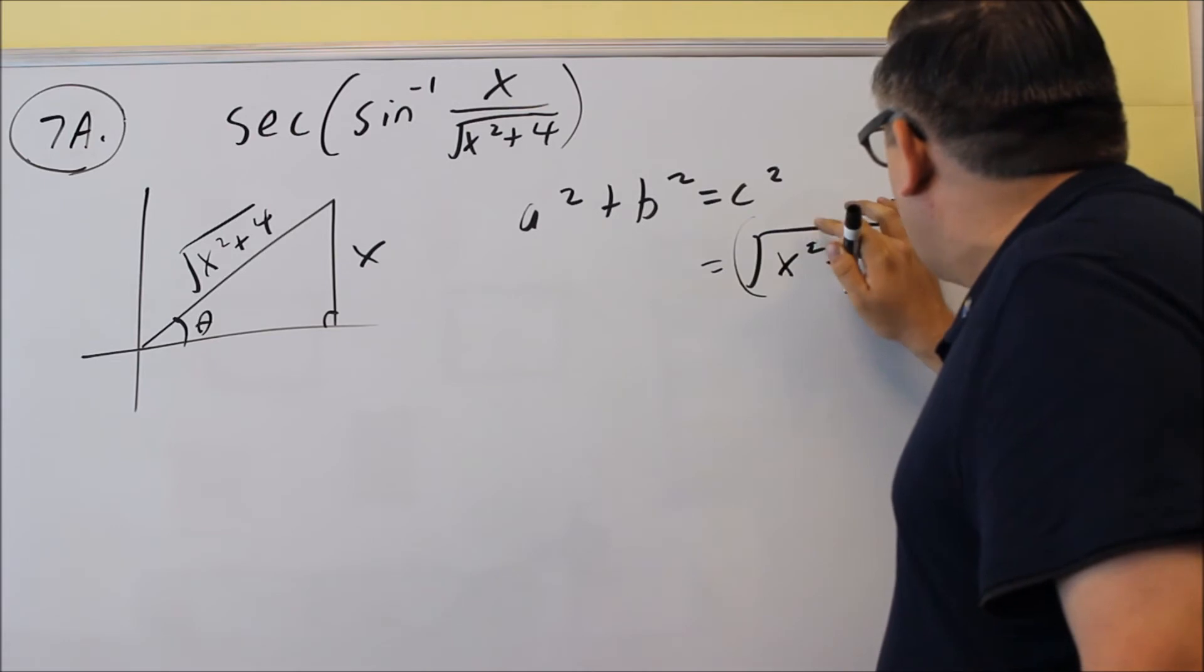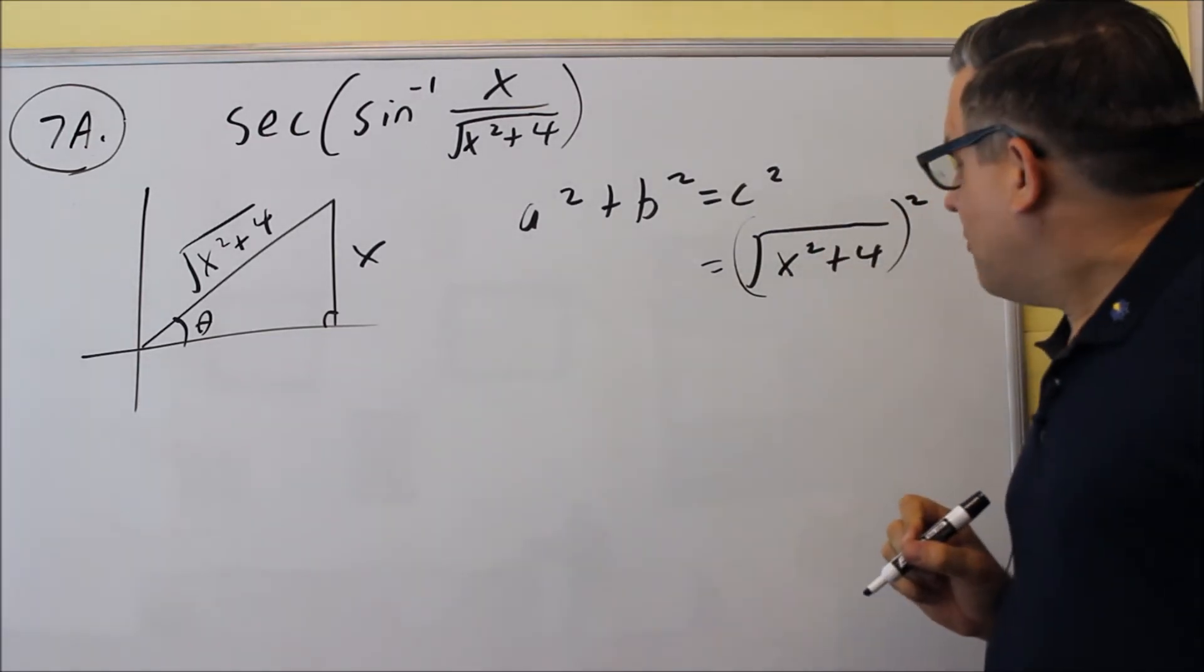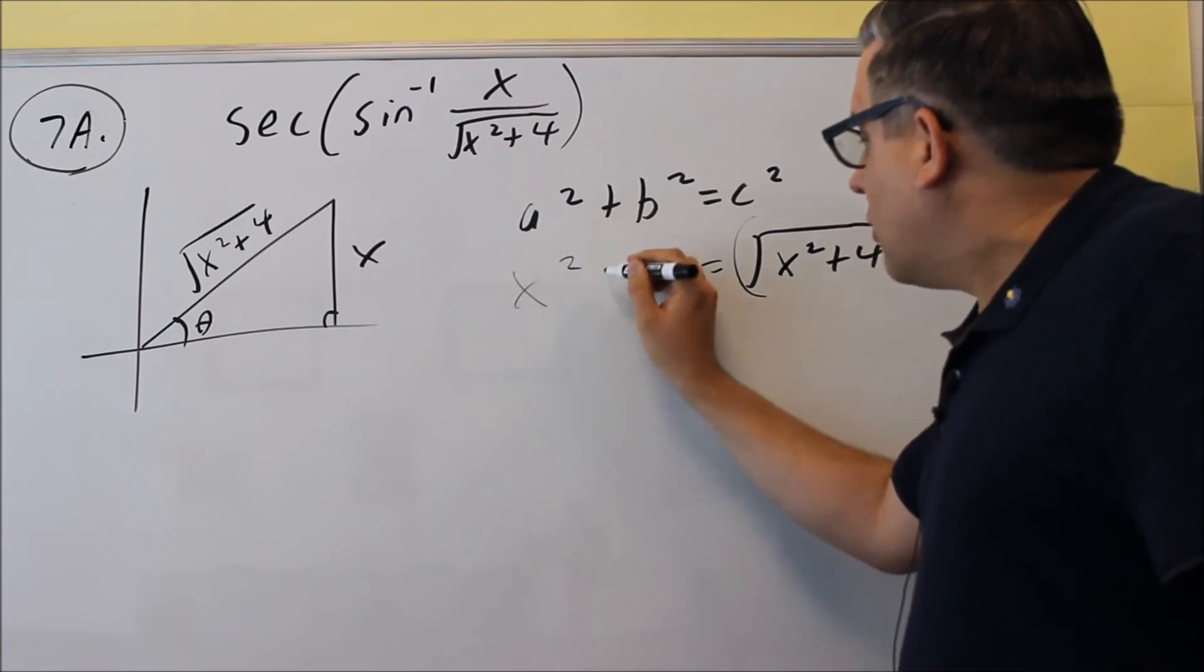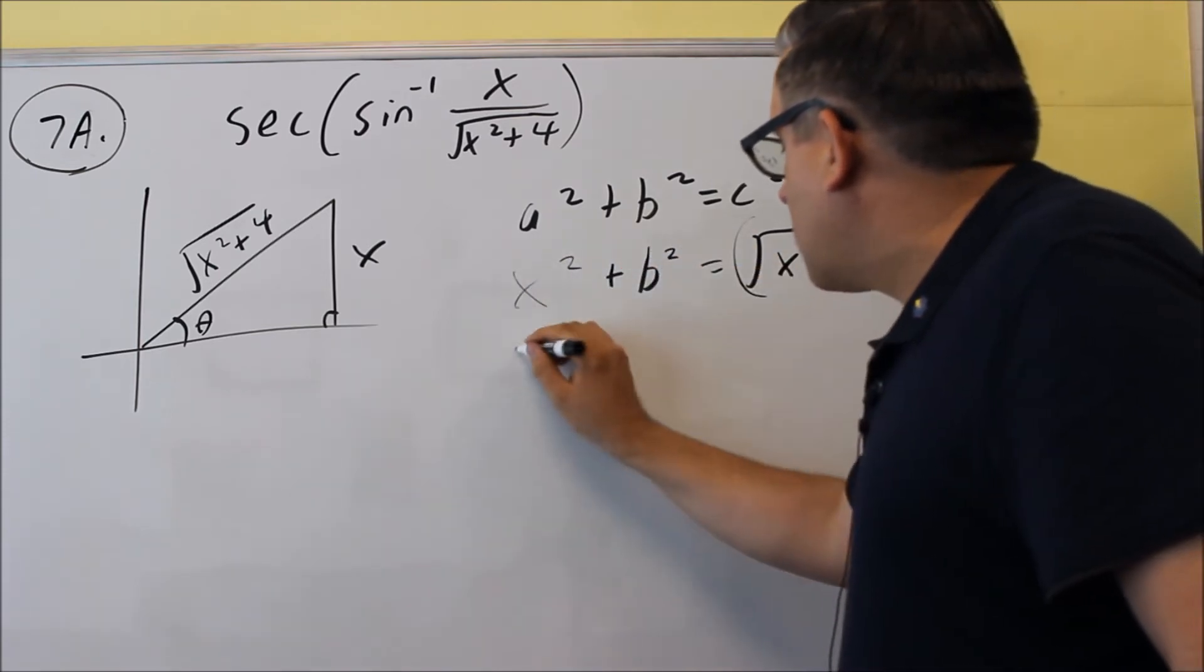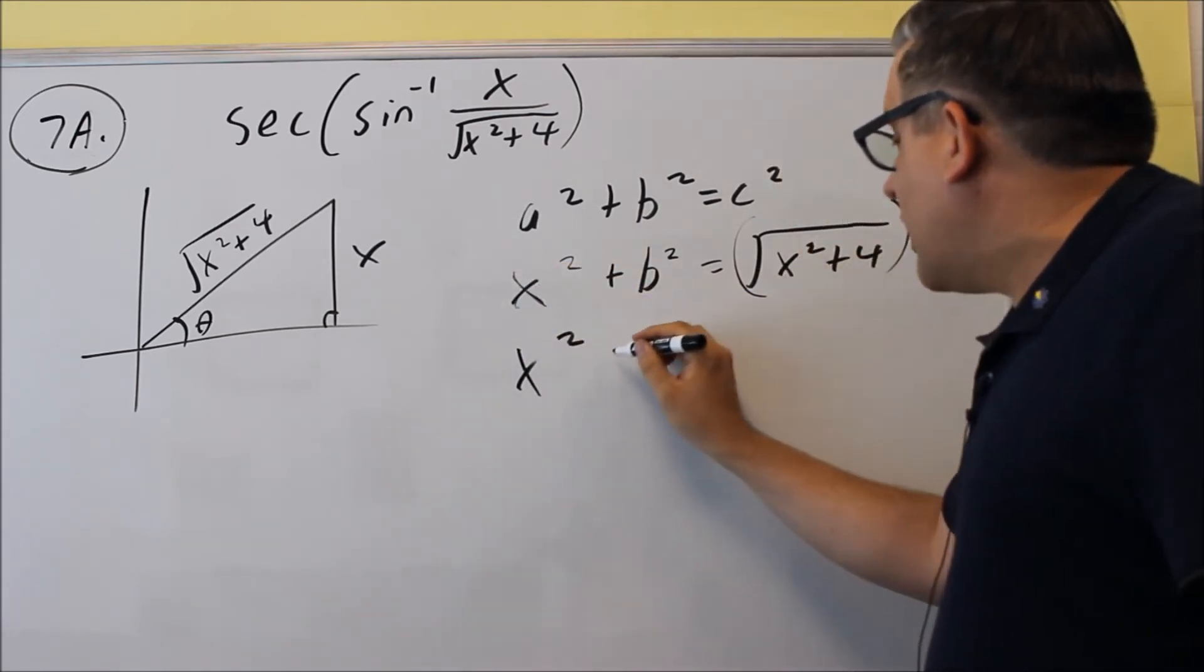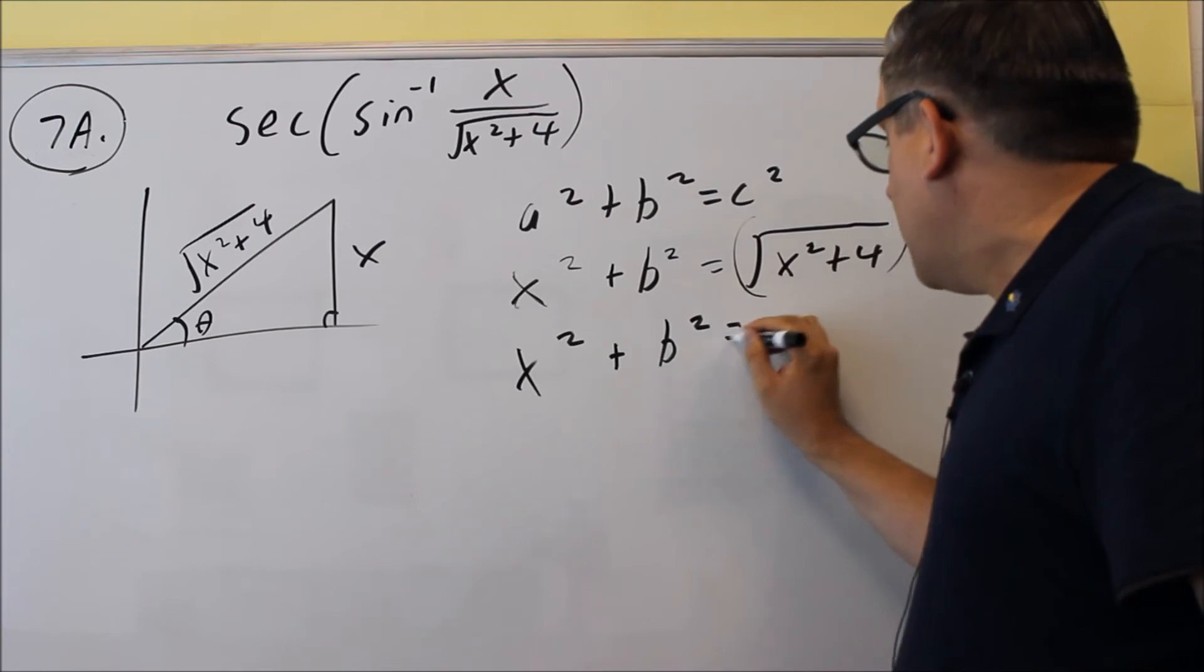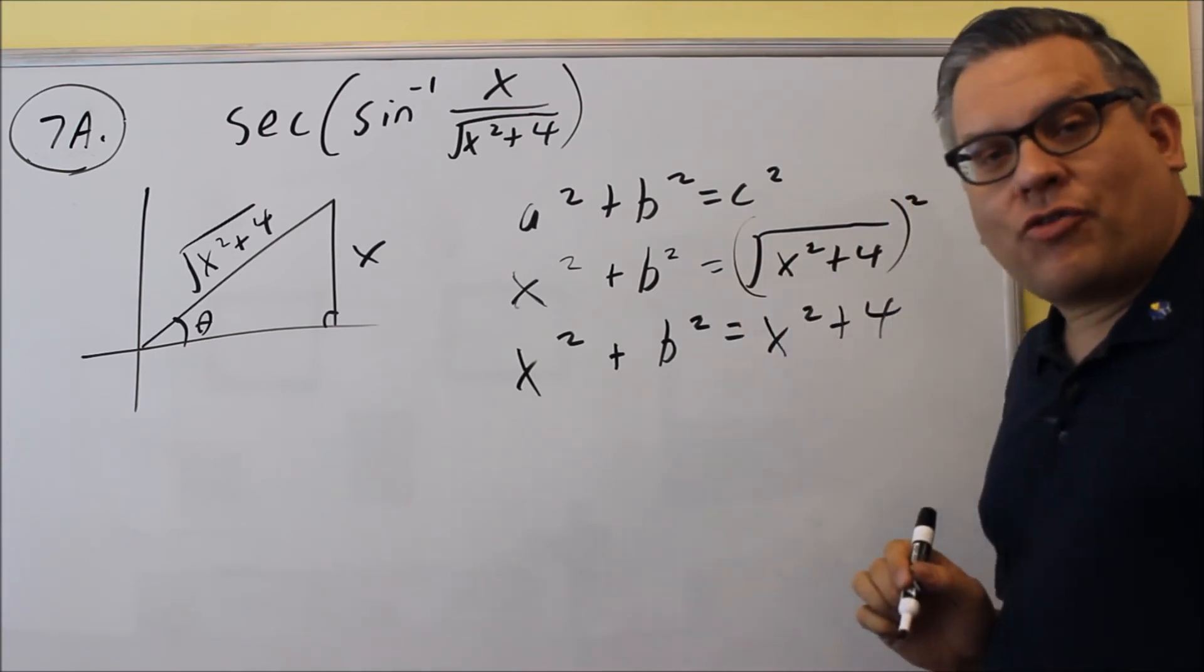But don't forget that we are squaring that one because it's c squared. Then I have x is going to go here. And then I'm just solving for the missing side. So first, let me square the other side, get rid of the radical. And that's going to give me x squared plus 4.